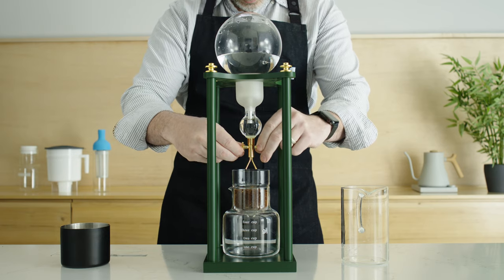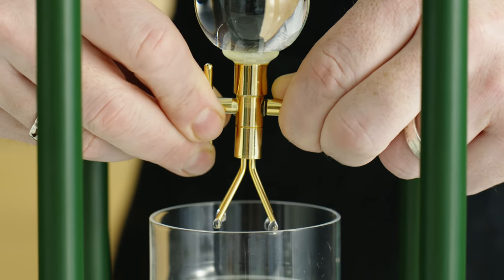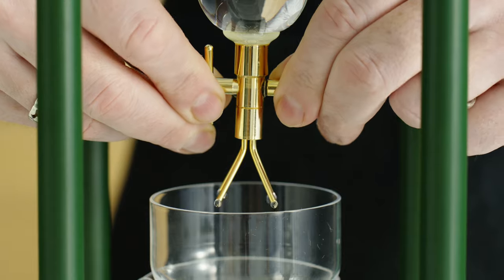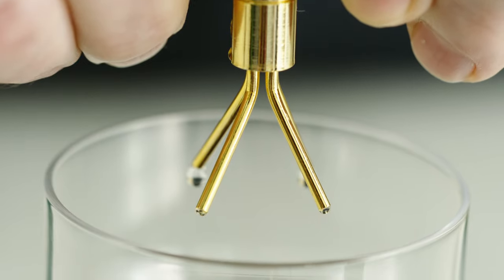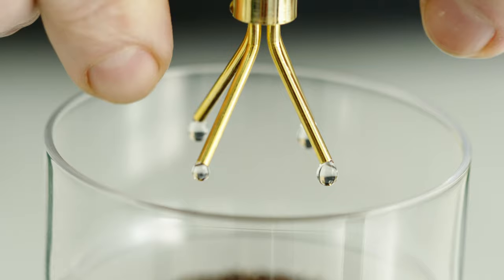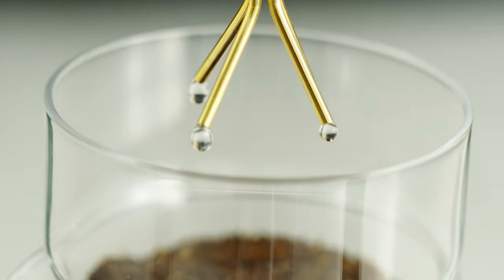Now we'll start the drip cycle. Slowly turn the spigot's lever so that the water drips out at a rate of one drip every three seconds. Water will drip from all four spouts, but just focus on the cadence of one when dialing in the drip rate.